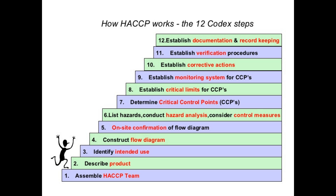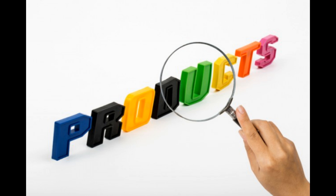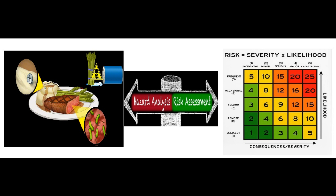The second step is to describe the product. Describing the product is very important because this product description will determine the risk of the product and will help the food safety team to conduct an appropriate risk assessment.